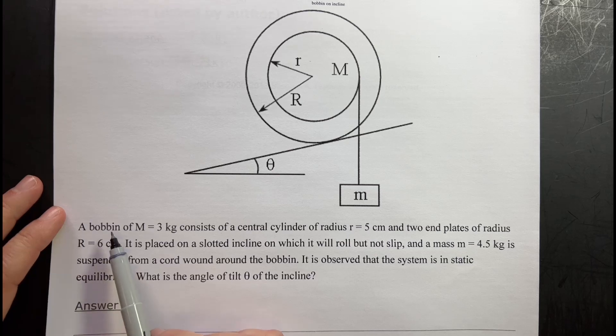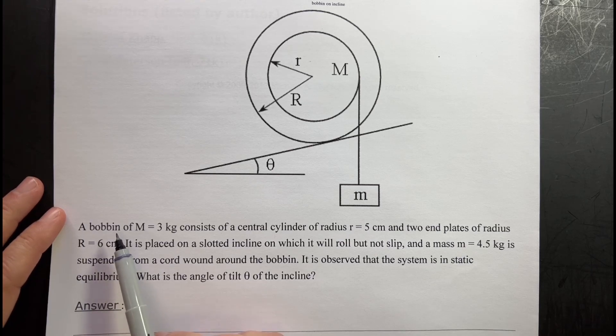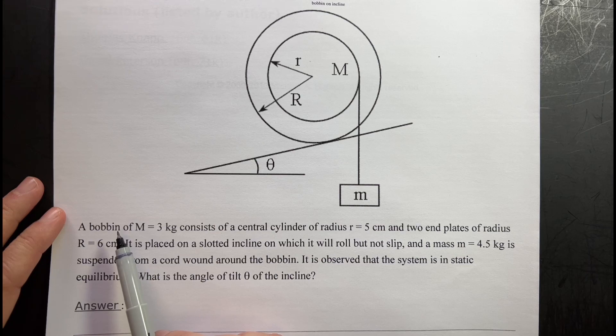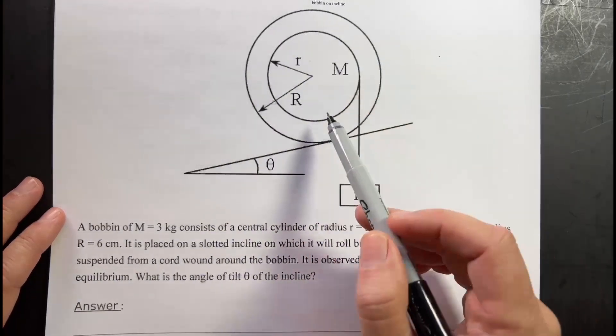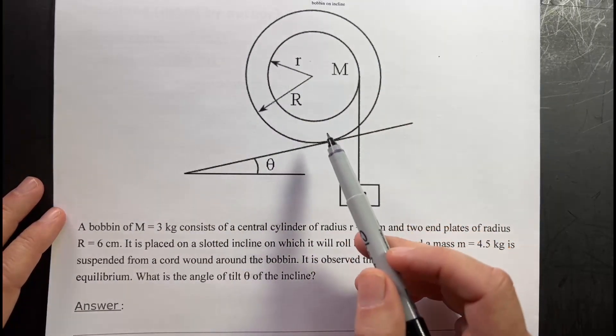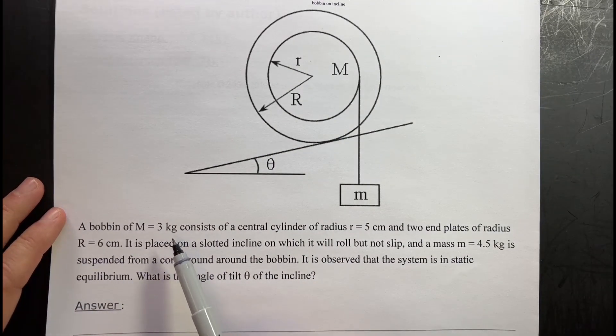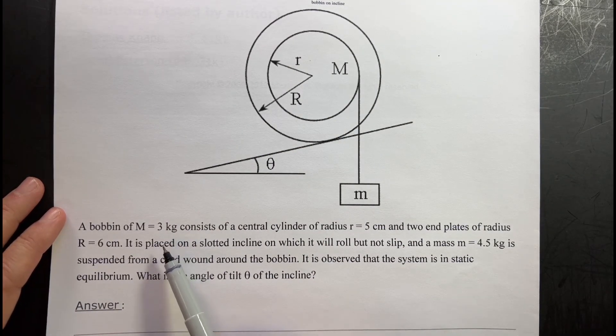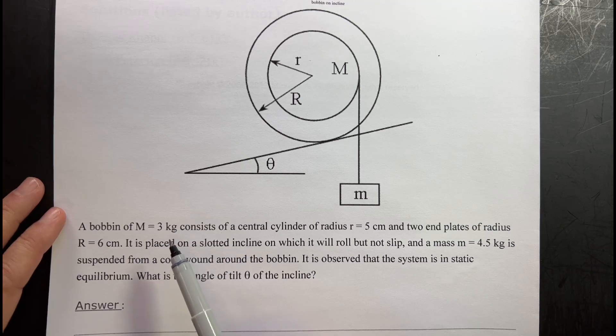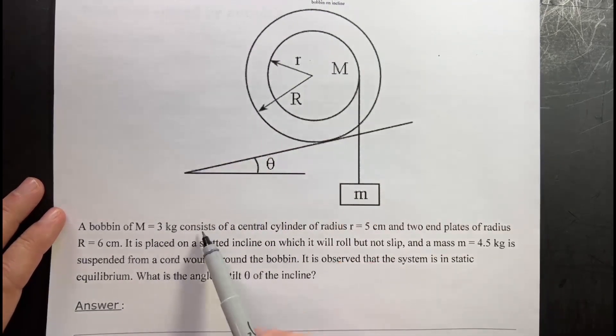A bobbin. So I guess it's like a sewing bobbin, like a needle and thread type bobbin. So it's a cylinder with a disc around it so that you can wrap the string around. It has a mass... Okay, it's not a sewing bobbin. It's 3 kilograms, so it's ginormous.